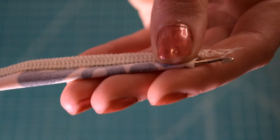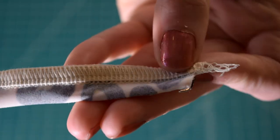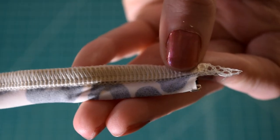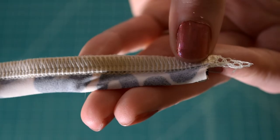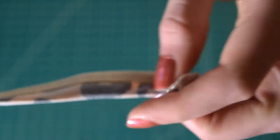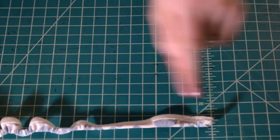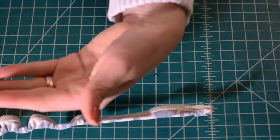Then we're going to just hook the hook of the loop turner through the fabric. So you can see here I have the hook on the outside of the fabric, and I'm going to hook it through my fabric.